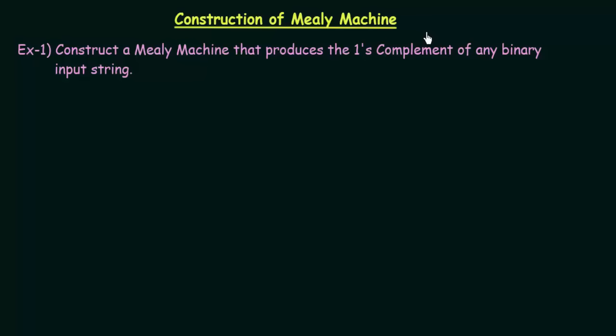Construct a Mealy machine that produces the one's complement of any binary input string. So we have to construct a Mealy machine that gives the one's complement as the output to any binary string that we give. Before we start, let us understand what is one's complement. One's complement is nothing but just the complement of any binary number.